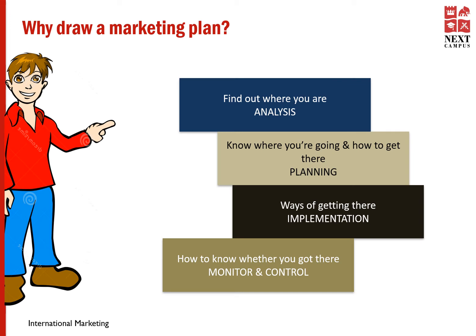The implementation part in the marketing plan is the action plan — the marketing mix elements, the 4Ps or the 7Ps as the case may be. You draw up the plan for the implementation. Then the monitoring and control part is there for you to understand: did I get there, did I get where I wanted to be, how far do I have to go, what happened?